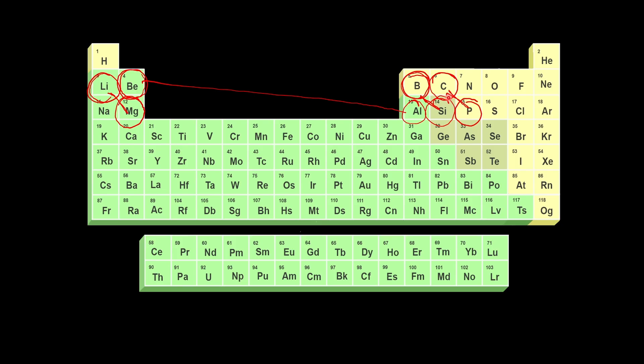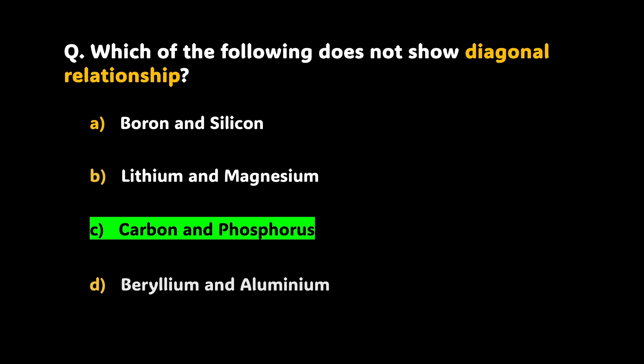So carbon and phosphorus simply don't make the cut. And that's why that is our answer. Which does not show, it is carbon and phosphorus that does not show and A, B and D do show diagonal relationship. Well, that sums up everything that we have done so far.